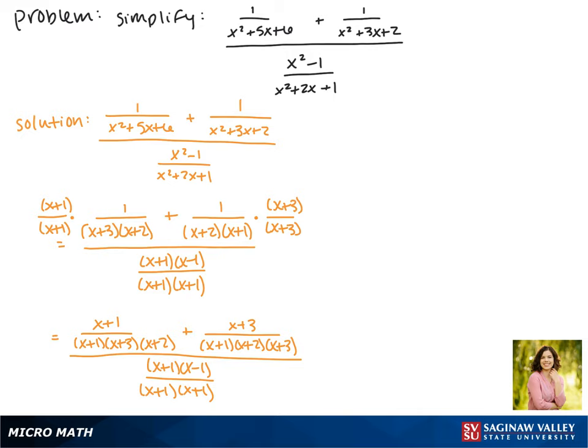Now we can combine terms in the numerator. The x plus x gives us 2x and the 1 plus 3 gives us 4. So we get 2x plus 4 on the top and then our factors are x plus 1, x plus 2, and x plus 3 in the denominator.